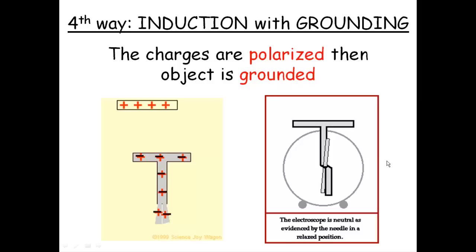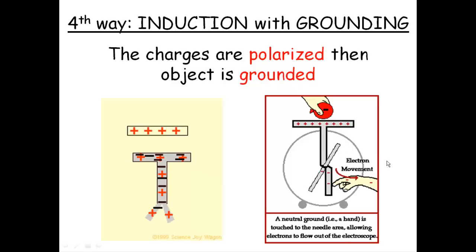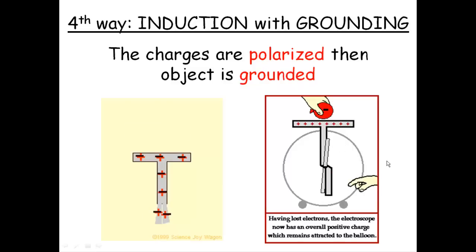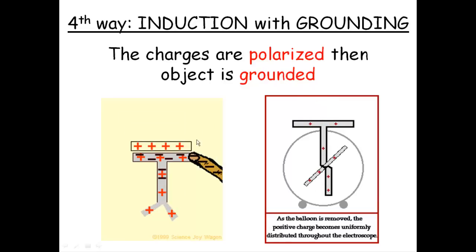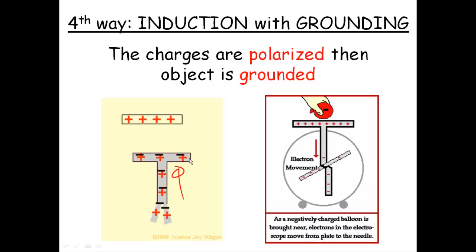The fourth way is we're going to induce a charge by polarizing it and then we're going to ground. Before we separated things, not allowing them to come back. Here we're going to touch and allow them to literally leave or enter and not be able to leave after that. So in my example here on the left, we bring a positive rod near, which means the electrons, remember they attract, run up. And these positives love electrons. So when you touch it,